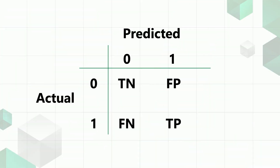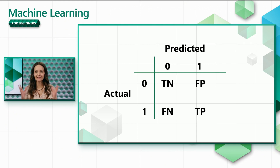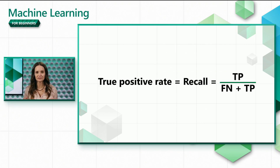Remember the confusion matrix? We learned about it in our last video, but let's look at it again. We'll learn how to calculate many different metrics using the confusion matrix. For the ROC curve, we'll need to consider the true and false positive rates. The true positive rate is just another name for recall, which is the fraction of packages we correctly predicted as white out of all packages that are actually white.